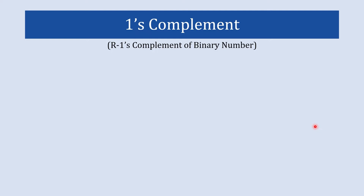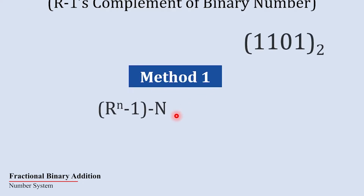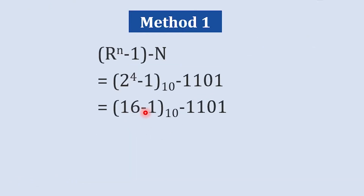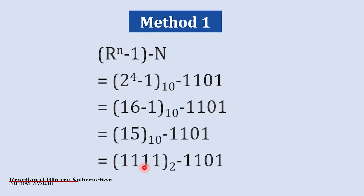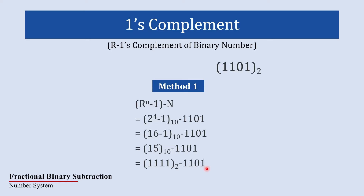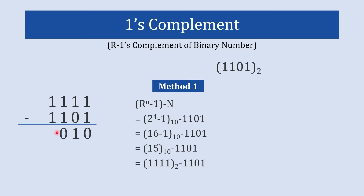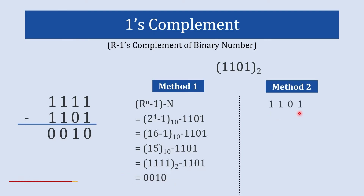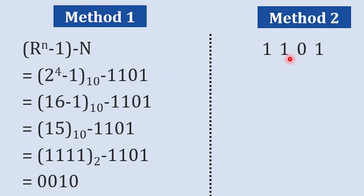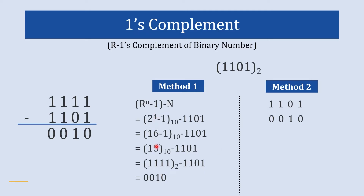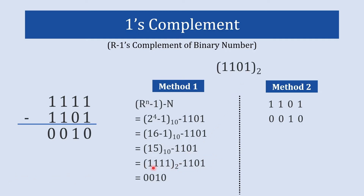Let's take one more example. Using method 1 with a 4-bit number: 2 raised to 4 minus 1 is 15, which in binary is 1 1 1 1. Subtracting 1 1 0 1 from 1 1 1 1 gives 0 0 1 0. Using method 2, just place 0's where there is 1 and 1's where there is 0, giving 0 0 1 0 — the same result. For method 1, simply write n ones and subtract the given number from them.